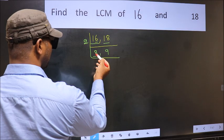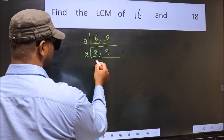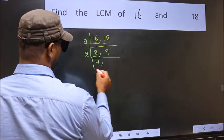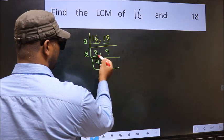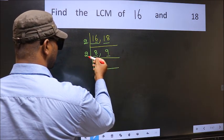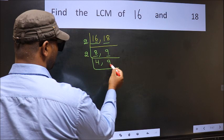Now here we have 8. 8 is 2 fours — 2 times 4 is 8. The other number 9 is not divisible by 2, so we write it down as it is.